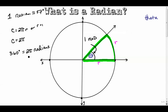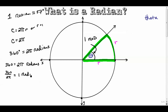Now I want to think about how we can get radians by itself and find the exact value of one radian. We already said it's about 57 degrees, but can we be more exact? Yes. Starting from 360 = 2π radians, divide both sides by 2π: 360 over 2π equals 1 radian. Simplify, and you get 180 over π equals 1 radian. That's the exact value of a radian, and that's how we'll constantly flip back and forth between degrees and radians.